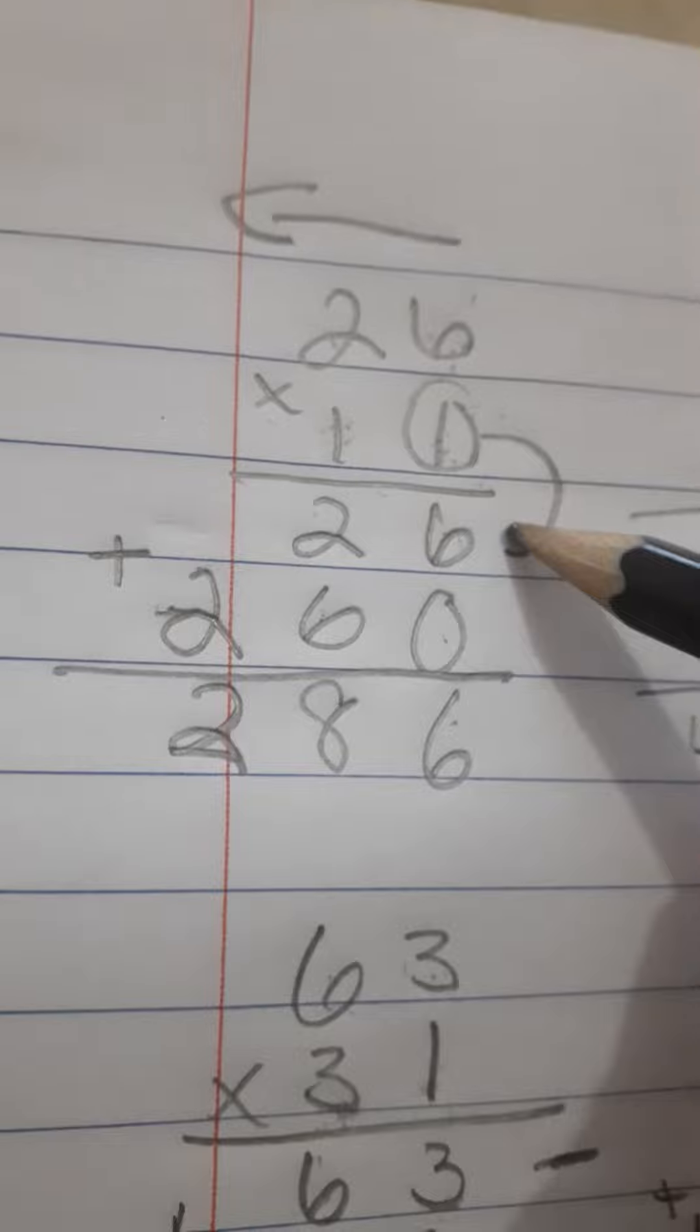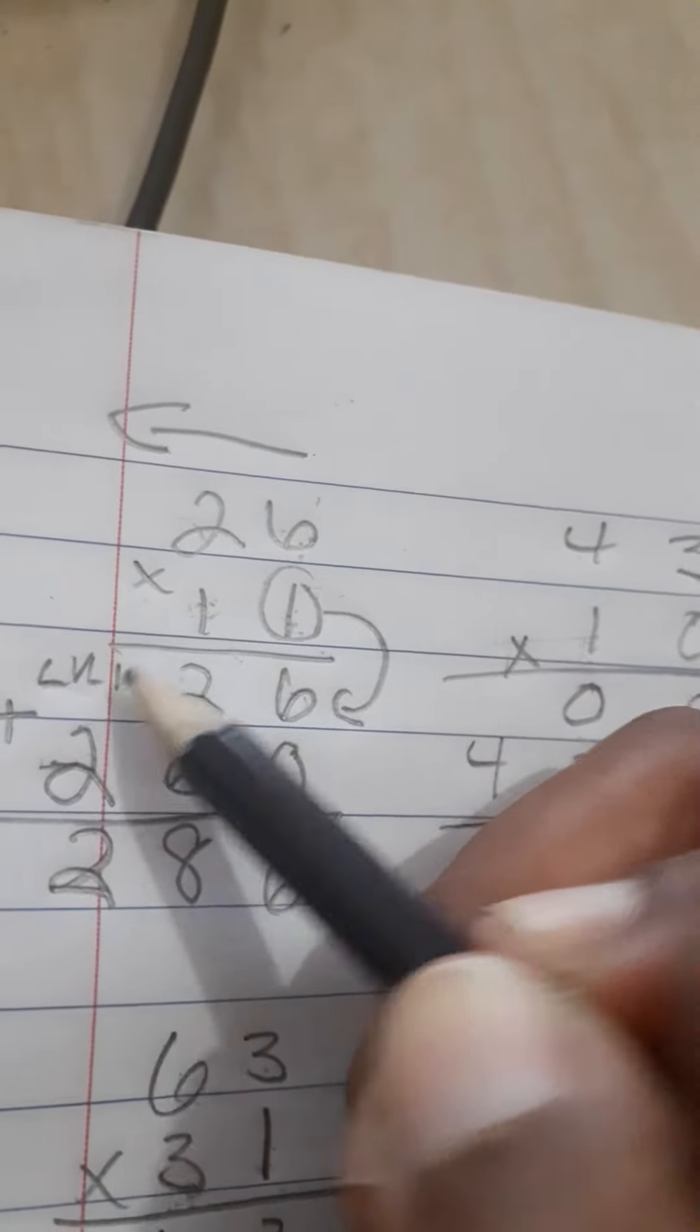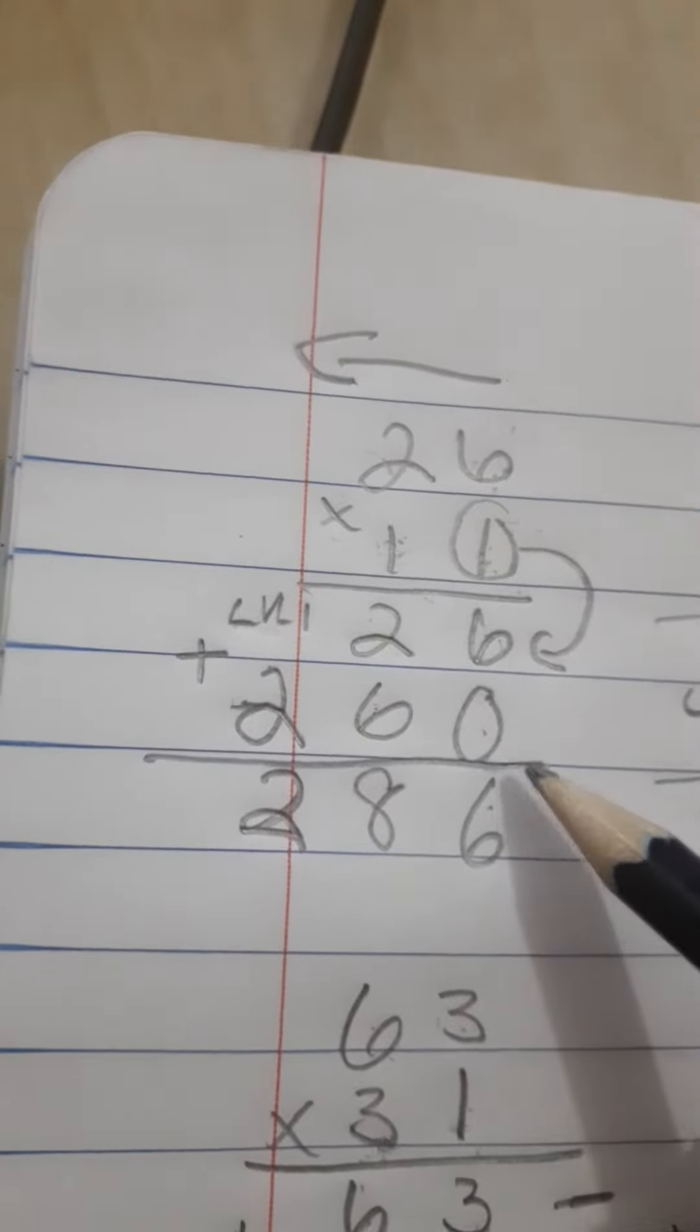And everything that's multiplied by this number goes in this level, level 1. Level 1. And then you have level 2.